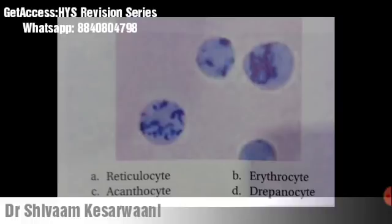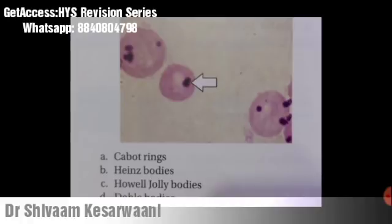Now tell me — you can see an RBC here, but is it an erythrocyte or a reticulocyte? This is an immature RBC seen in anemia — it is a reticulocyte. Reticulocytes have a reticular network of ribosomal RNA which becomes visible under a microscope with stains like methylene blue. That is why it is not a mature RBC but an immature RBC called a reticulocyte.